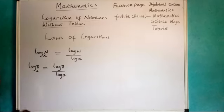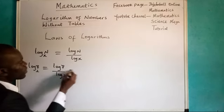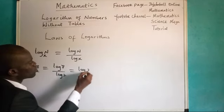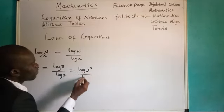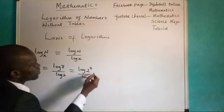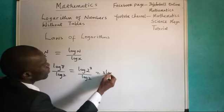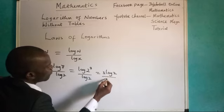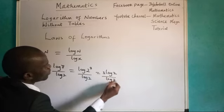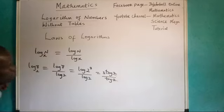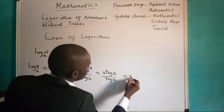Okay, if I don't want to use the calculator, I can reduce this very one. Become log 2 power 3 divided by log 2. I will take the 3 out. Become 3 log 2 divided by log 2. Log 2 cancels log 2 and I will have 3.